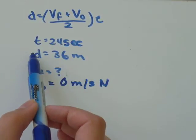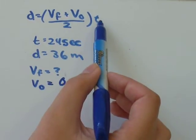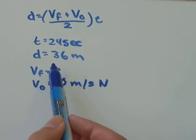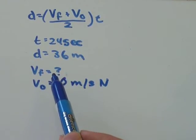we have D, we have T, we have V0, and we're being asked to solve for VF. So we have all the information we need.